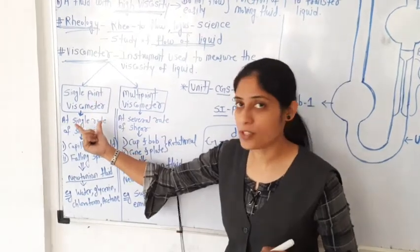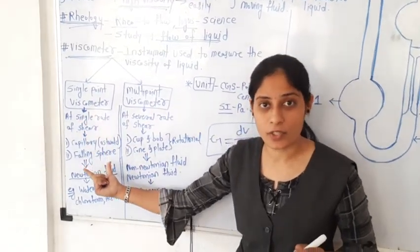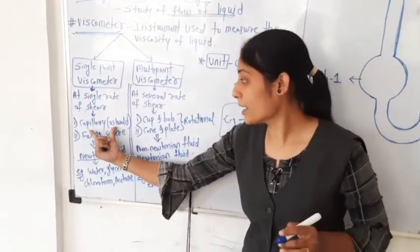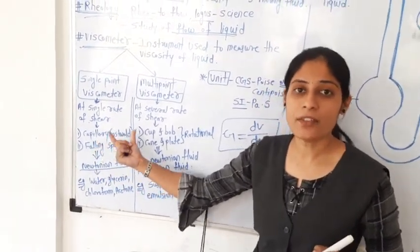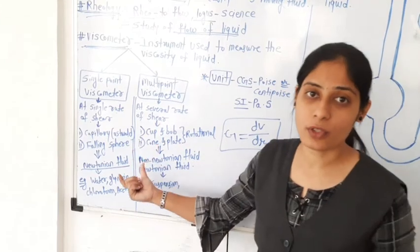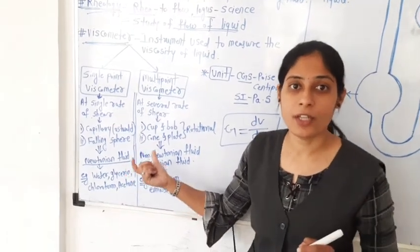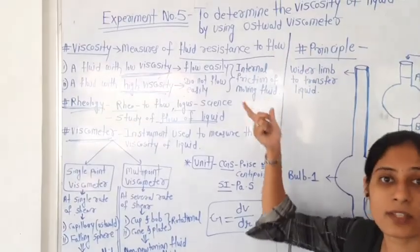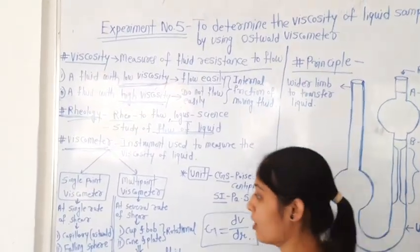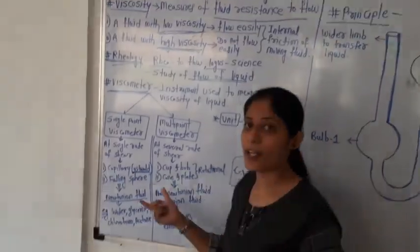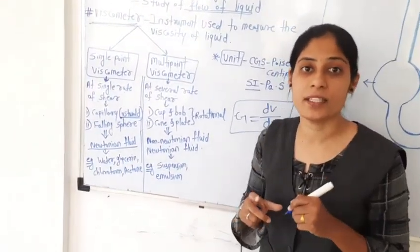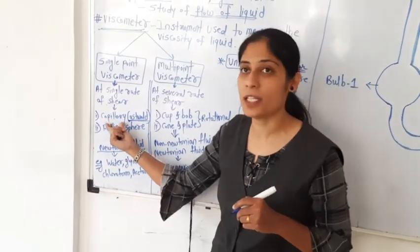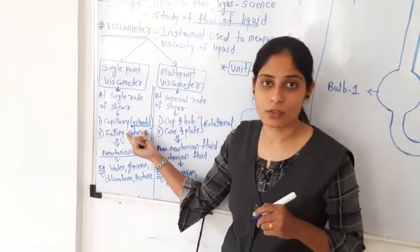In single point viscometers, there are two types: first, capillary viscometer, and second, falling sphere viscometer. The capillary viscometer is also called the Ostwald viscometer. In today's practical, we will use the Ostwald viscometer to determine the viscosity of liquid. The Ostwald viscometer is called a capillary viscometer because a capillary tube is present in it.